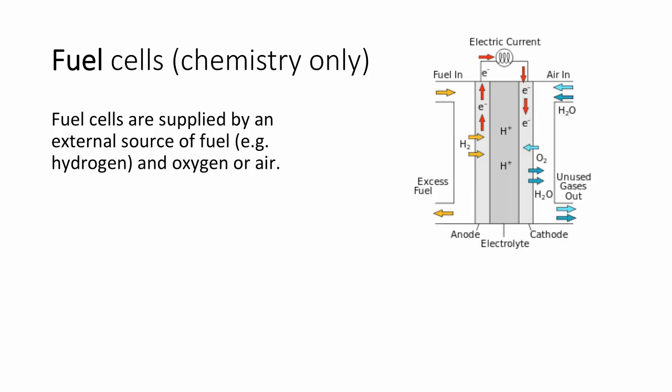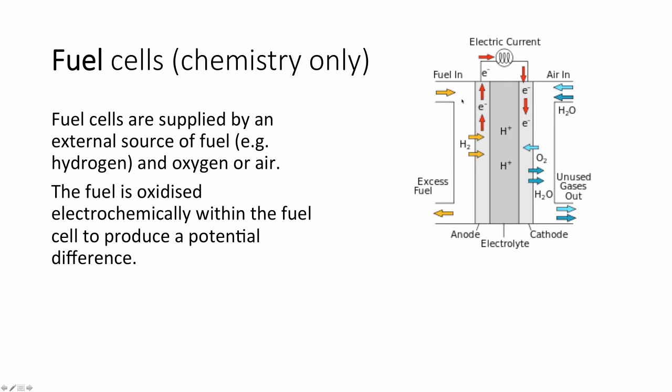Fuel cells. Fuel cells are supplied by an external source of fuel, e.g. hydrogen and oxygen or air. These are different from normal cells in that they require a constant amount of fuel. The fuel is oxidised electrochemically within the fuel cell to produce a potential difference. Note that this is not the combustion of hydrogen. This is an electrochemical reaction, so heat is not produced, which makes it more efficient.